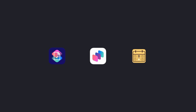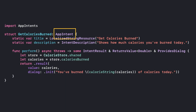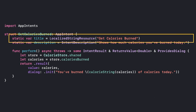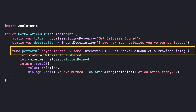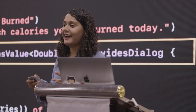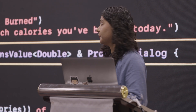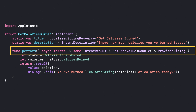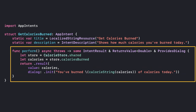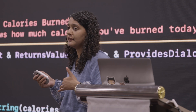App Intent is a protocol, so all the intents in our app must conform to the App Intent protocol. To conform to this protocol, we need to provide a title — this is the title of my App Intent. I also need to provide a perform method. This perform method is the main part where the actual action happens, where the actual work the App Intent wants to perform goes. We return our intent result from this perform method. This intent is to get my calories burned throughout the day, so this App Intent is getting the calories burned value and returning the result with this value as well as a dialog. With the dialog, I'm specifying to the system to show the information in the form of a dialog.